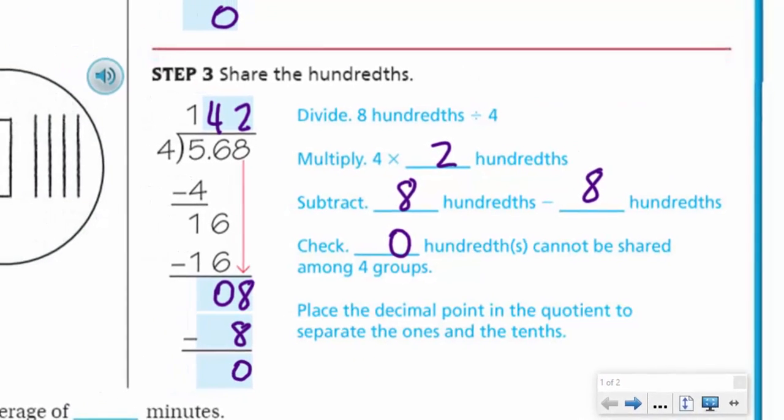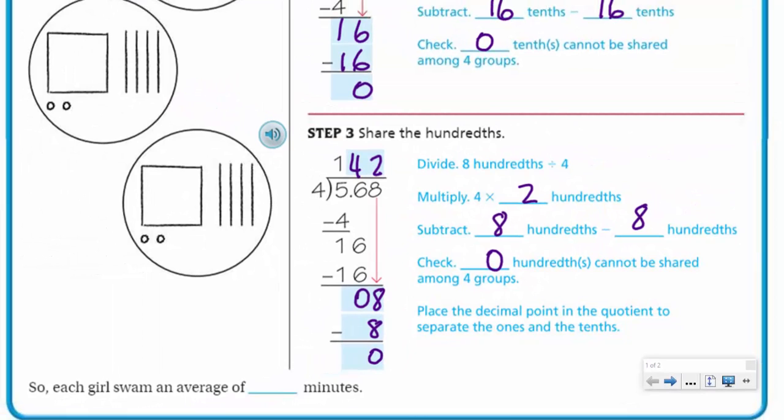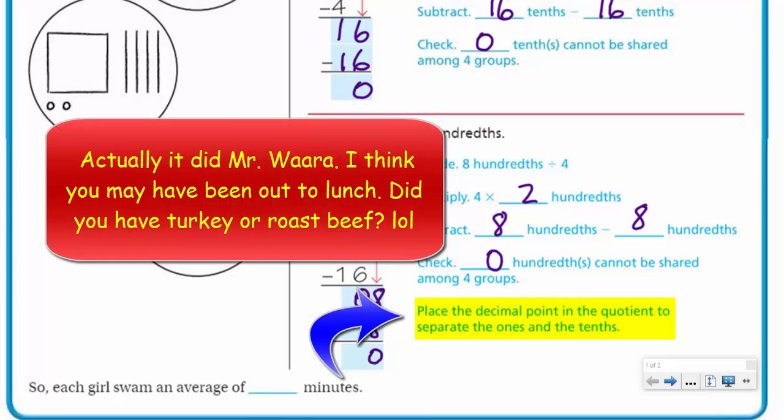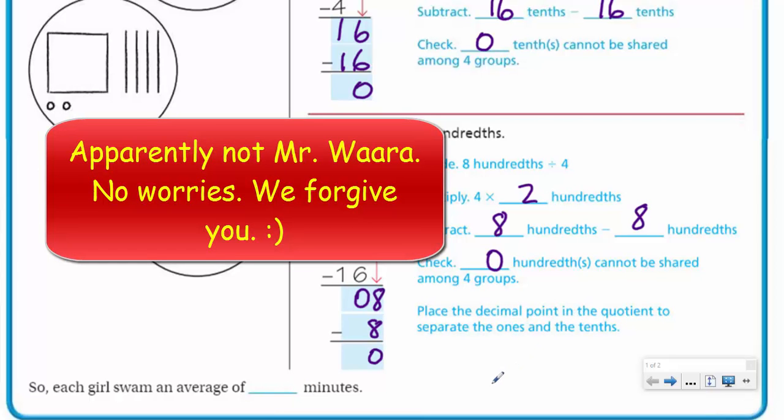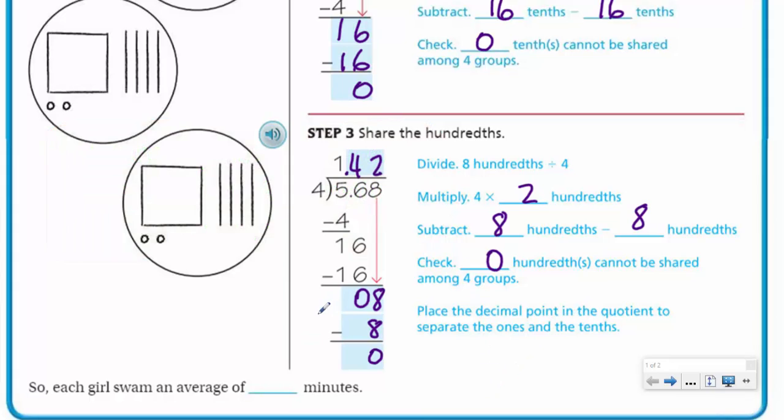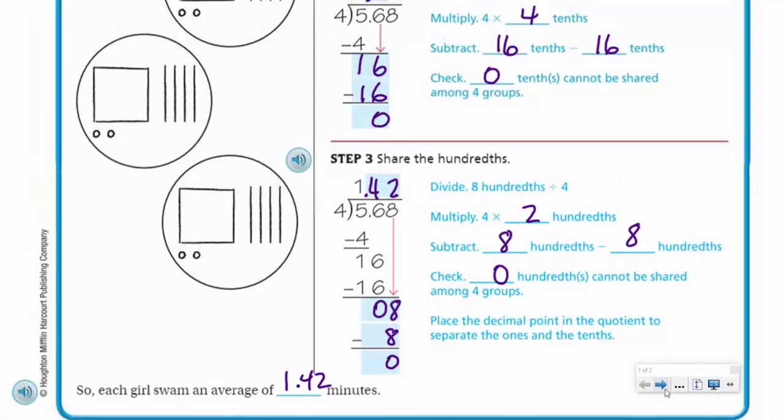Place a decimal point in the quotient to separate the ones and the tenths. So each girl swam an average of. Yeah. That average would be about. One. Ooh. I didn't. You know what? I never put my decimal up here. Did it tell us to put the decimal up there? It did not. Oh no. Okay. Hey. We need to have that decimal there. Yeah. I was following all the steps here. Unless it said to put it there. And I didn't read that part of the instruction. Now, because this is the end, it says place the decimal point in the quotient to separate the ones and the tenths. Okay. I tend to put it first. Here's suggesting to put it at the end here. I guess either way works. Yes. Okay. So we end up with one and forty two hundredths minutes. So just over a minute.